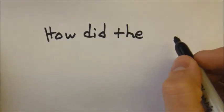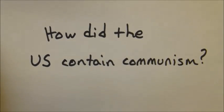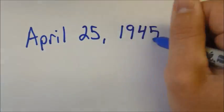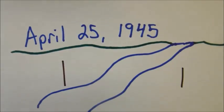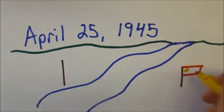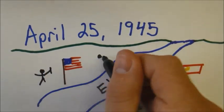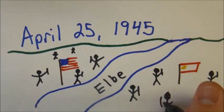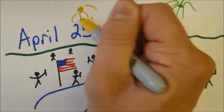How did the United States contain communism? On April 25th, 1945, at the Elbe River, these two powerful armies from America and Russia had cut Hitler's Germany into two parts. This was a great time for these two powers, but this celebration would not last long.